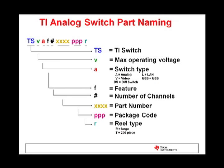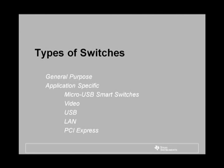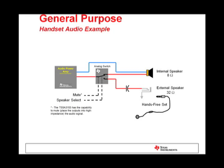Now that we have covered the generics of signal switches, we will get into the different types of switches. To start off, we are going to cover a general purpose audio signal switch — the TS5A3153. It is a single pole dual throw, or SPDT, analog switch designed to operate from 1.65 volts to 5.5 volts. The switch has the capability to mute the audio signal or select the speaker. The device offers low on-state resistance, excellent on-state resistance matching, and a break-before-make feature to prevent signal distortion during signal transfer from one channel to another. It also has excellent total harmonic distortion, or THD, performance and consumes very low power.